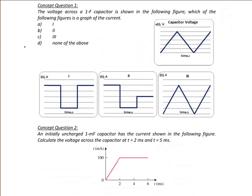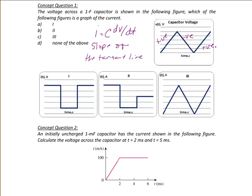Now let's try concept questions. The voltage across a 1 farad capacitor is shown in a figure — which figure is a graph of the current? Using I equals C dV/dt with C equal to 1 farad, the current is the derivative of the voltage, which equals the slope of the tangent line. Our waveform has a positive slope, a negative slope, and a positive slope. The only answer waveform with positive, negative, then positive slope is the first one. The second has different slopes and the third is just a copy of the original, so the answer is letter A.